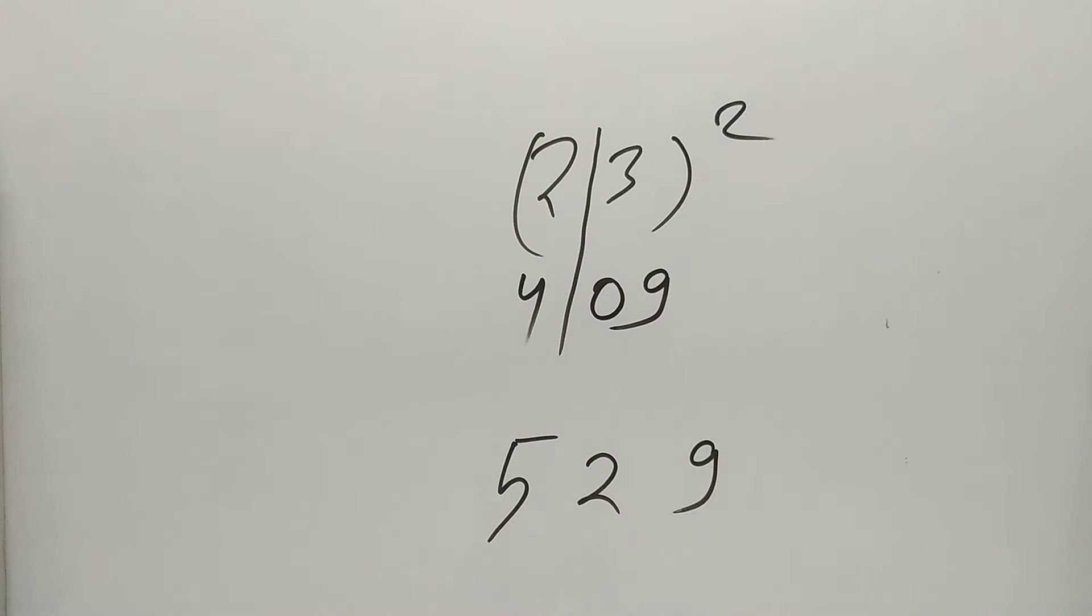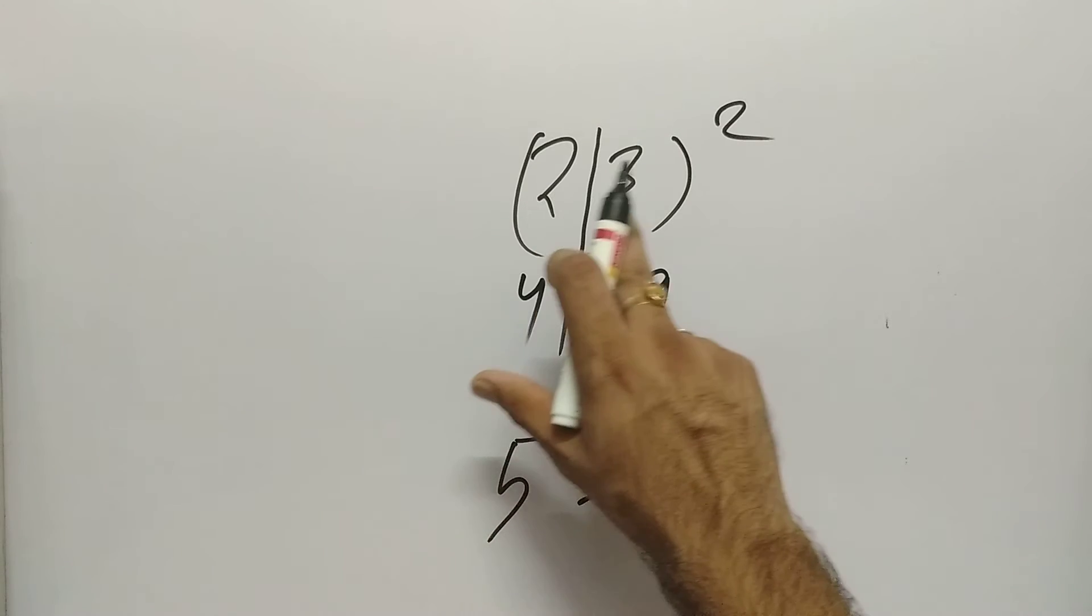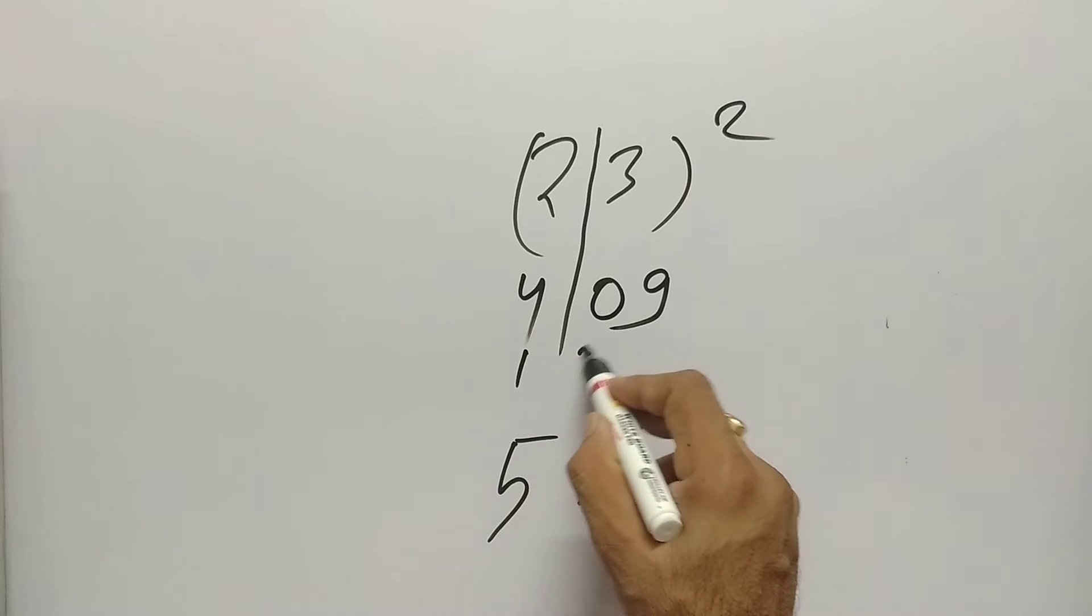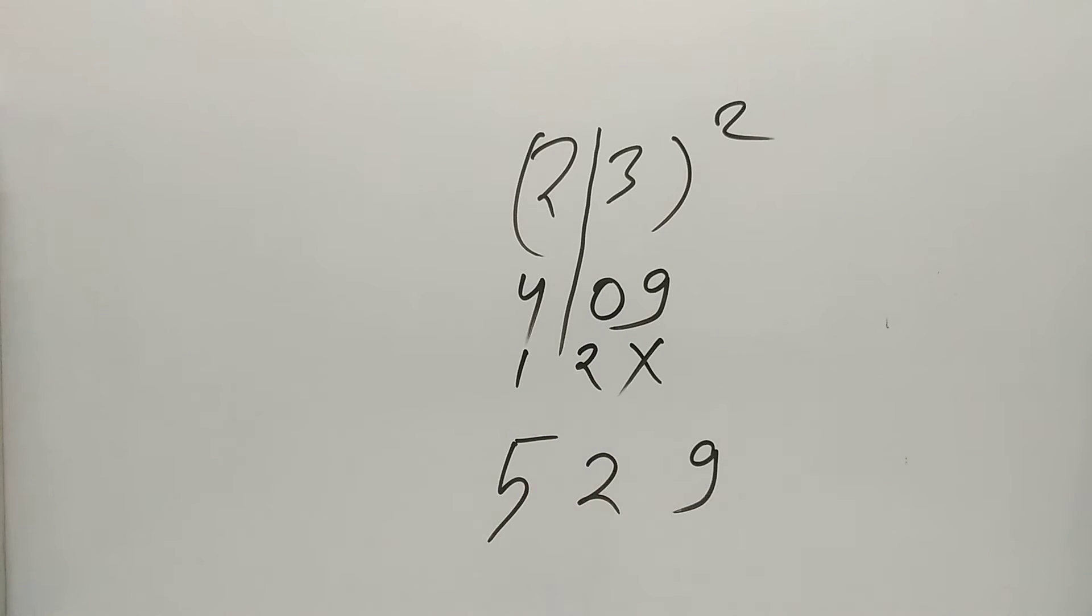After that, what we are going to do? Very simple. 2 times 3 is 6, 6 times 2 is 12, so we will write here. After that we will add 9 plus 0 is 9, 0 plus 2 is 2, 4 plus 1 is 5. So the square of 23 is 529.